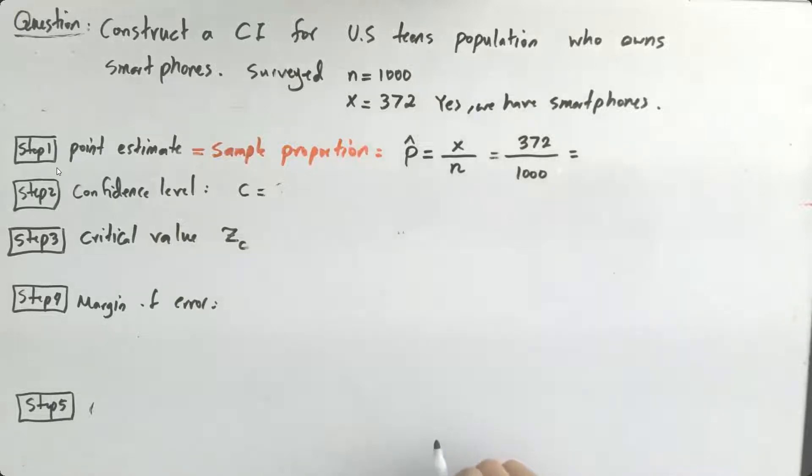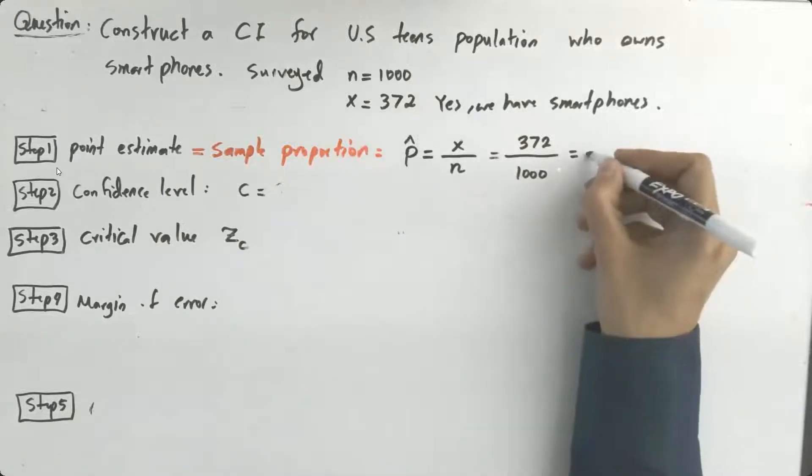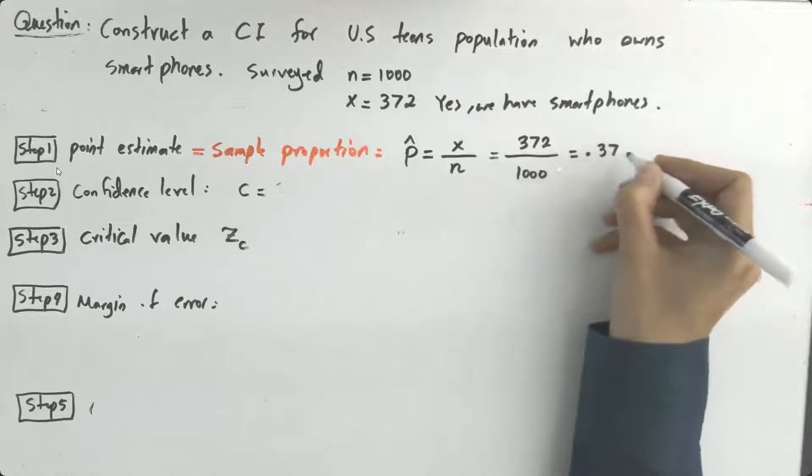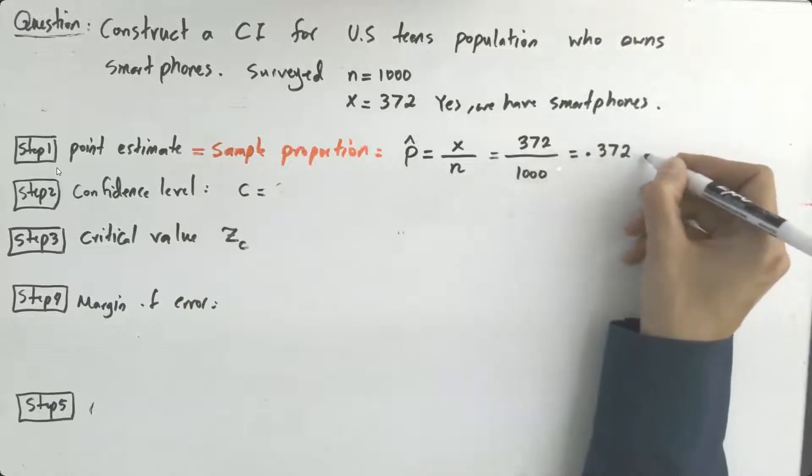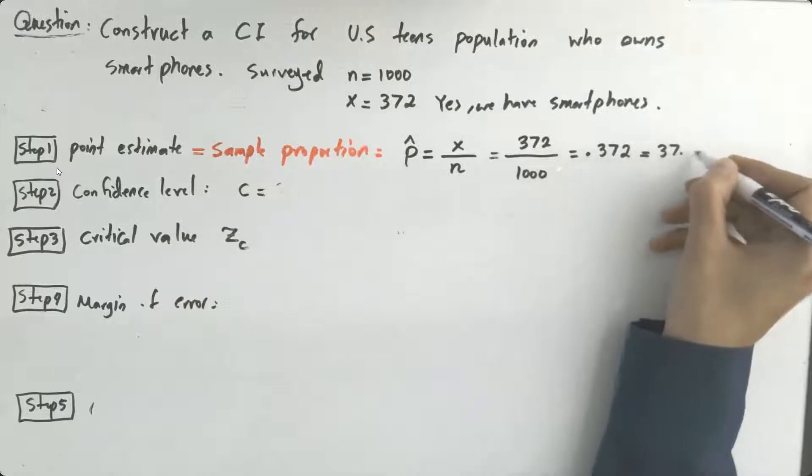thousand which is going to be 0.372 or you can write it in percent form which is 37.2 percent.